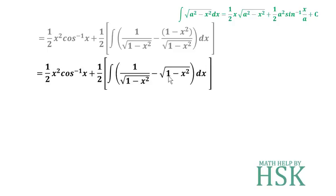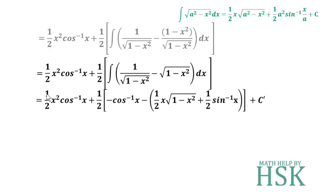Substituting a = 1, the formula gives (1/2)x·√(1 − x²) + sin⁻¹(x). So our full expression becomes: (1/2)x²·cos⁻¹(x) + (1/2)[−cos⁻¹(x) − (1/2)x·√(1 − x²) + sin⁻¹(x)] + C′. We write C′ here because a constant term may appear during further simplification.